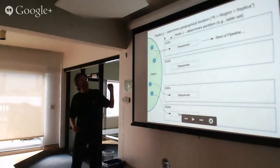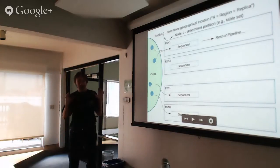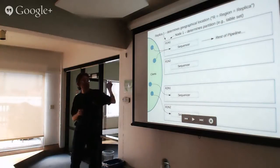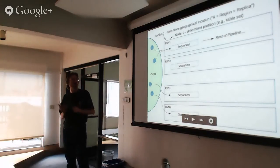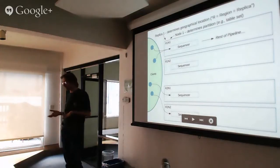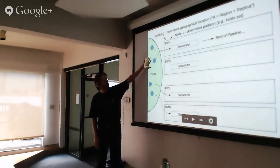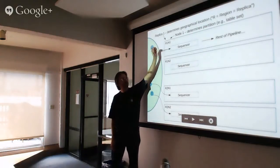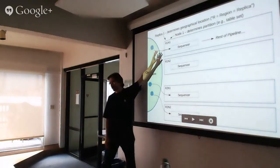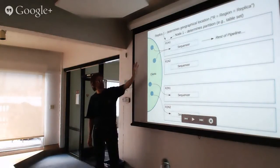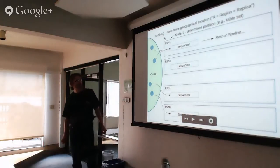Each replica has a completely separate pipeline of components. The first one is called the sequencer — that's where the actual ingestion of transactions happens. When clients submit a transaction request, the first thing it goes to is the sequencer. There's a little preprocessing that sometimes has to happen, but that's really where the system takes hold of the incoming stream of transactions.